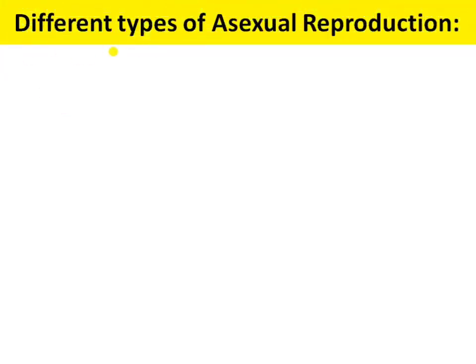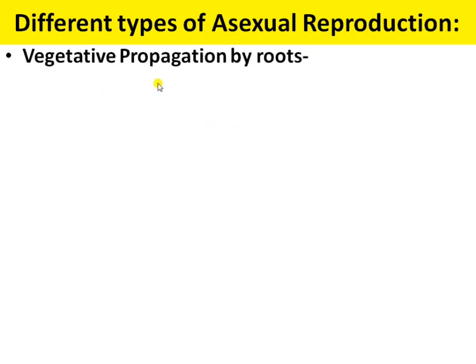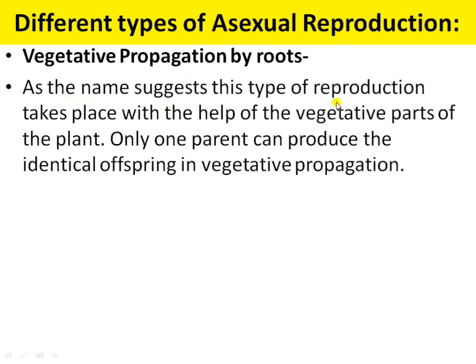Next are the different types of asexual reproduction. First is vegetative reproduction — that is, vegetative propagation by roots. In vegetative reproduction, new plants are formed from the vegetative parts like roots, stem, and leaves. As the name suggests, this type of reproduction takes place with the help of vegetative parts. Only one parent can produce identical offspring in vegetative propagation.